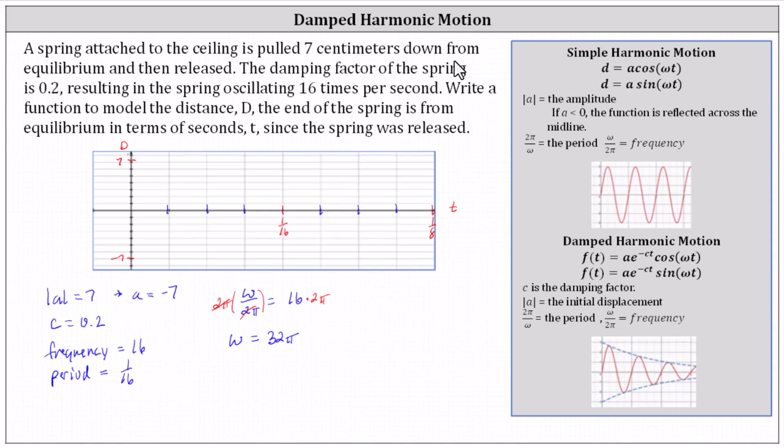Because the spring is pulled down 7 centimeters to begin, at time 0, we have the point 0 comma negative 7, which would be this point.